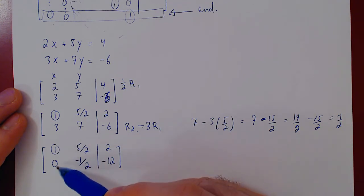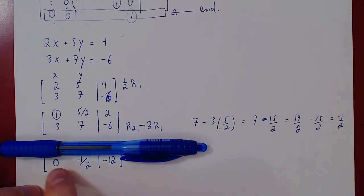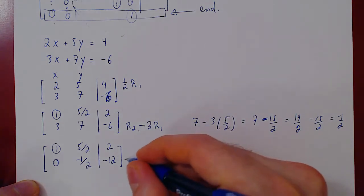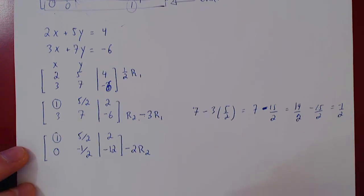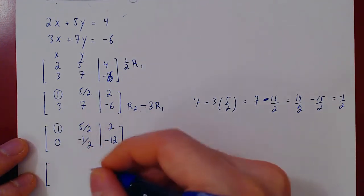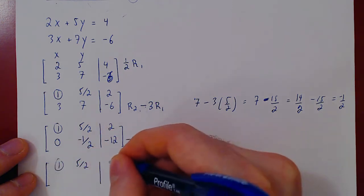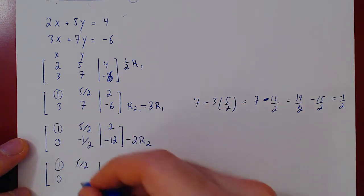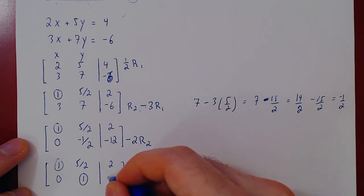Now that every entry below our leading 1 is 0, we ignore that row and try to construct our second leading 1. Since the first entry in row 2 is already 0, it will come from the next entry. So we multiply row 2 by negative 2 to obtain our second leading 1. We recopy row 1 unchanged. Negative 2 times 0 is 0. Negative 2 times negative 1/2 is positive 1 — our second leading 1. Negative 2 times negative 12 is positive 24.